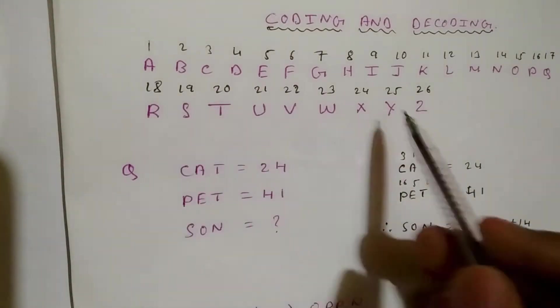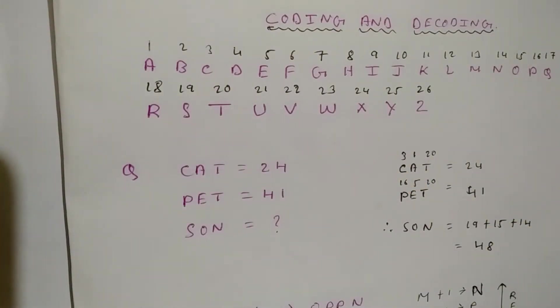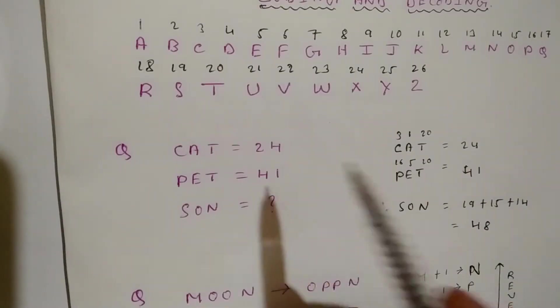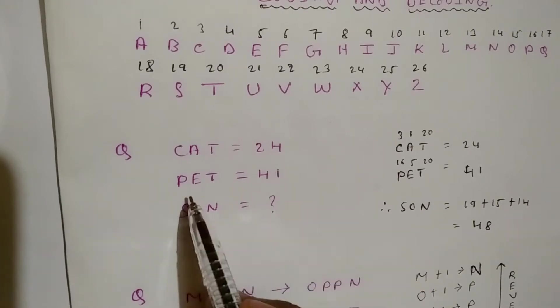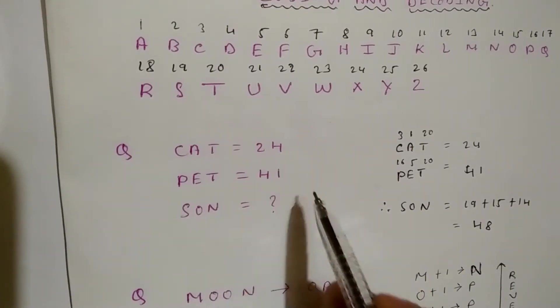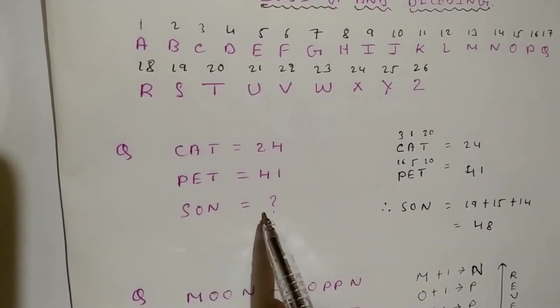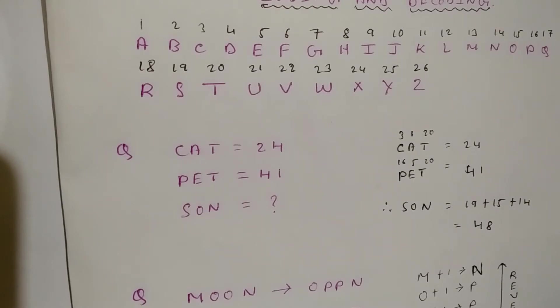Now come to the question. Our first question is: if CAT equals 24 and PET equals 41, then what is the value of SON? You can think and then solve. You can pause this video and do it.